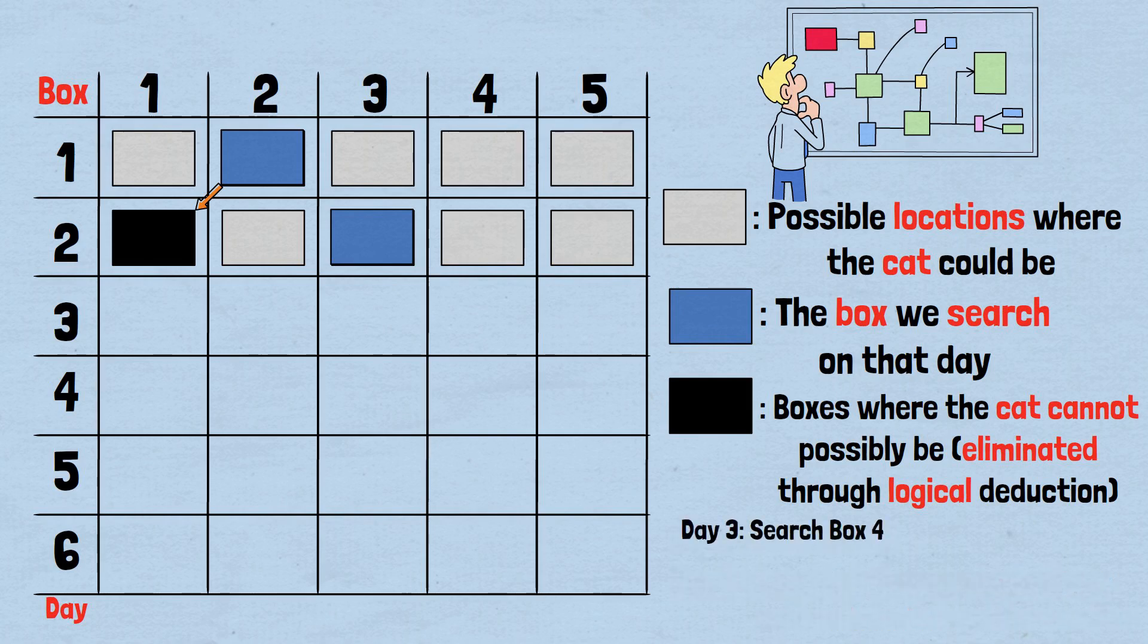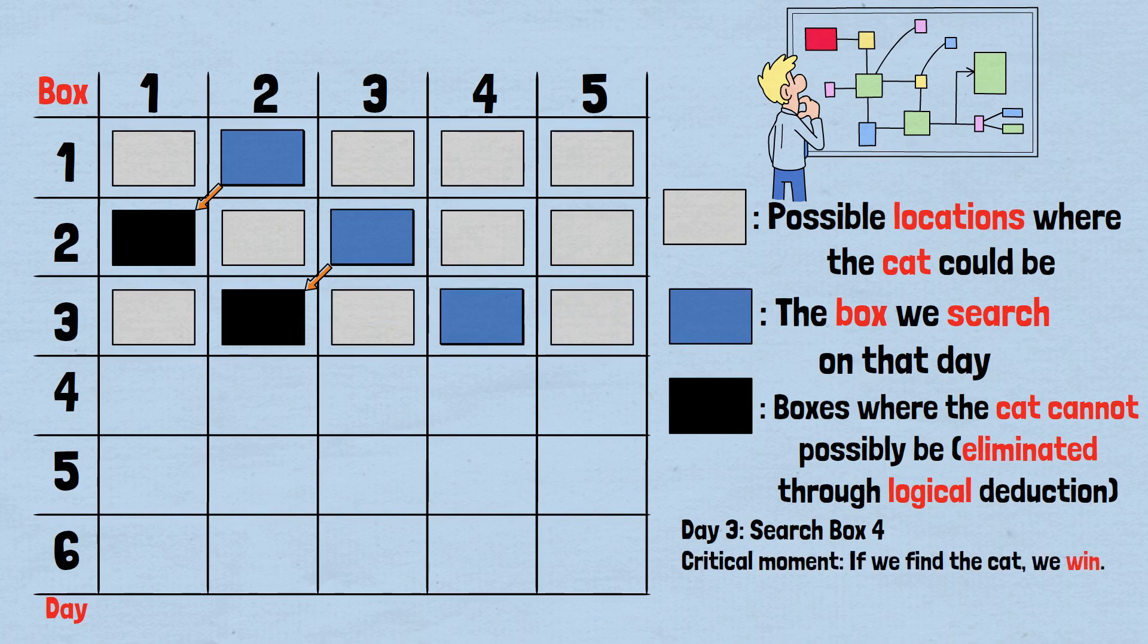Day 3: Search box 4. Further deduction: We can now eliminate box 2, mark it black. If the cat wasn't in boxes 1 or 3 on day 2, it couldn't reach box 2 on day 3. Grid status: Only boxes 3, 4, 5 remain gray. Our search: We check box 4, blue. Critical moment: If we find the cat, we win. If not, we've just learned something crucial about the cat's starting position.